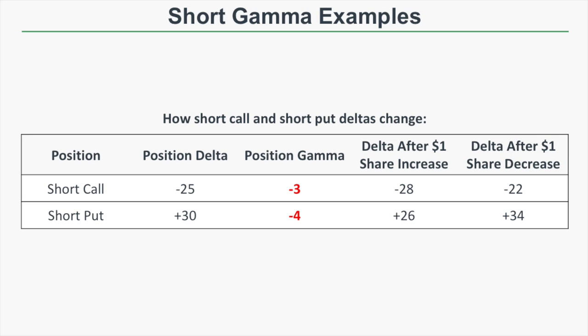Now let's talk about short gamma. Take a short call position with a delta of negative 25 and a position gamma of negative 3. If the stock price increases by one dollar, the new position delta is expected to be negative 28. If the stock price decreases by one dollar, the new position delta is expected to be negative 22.